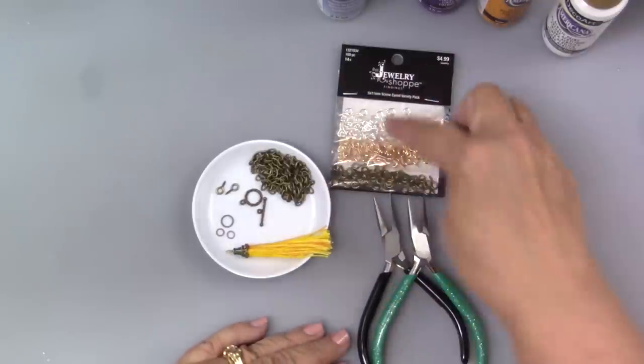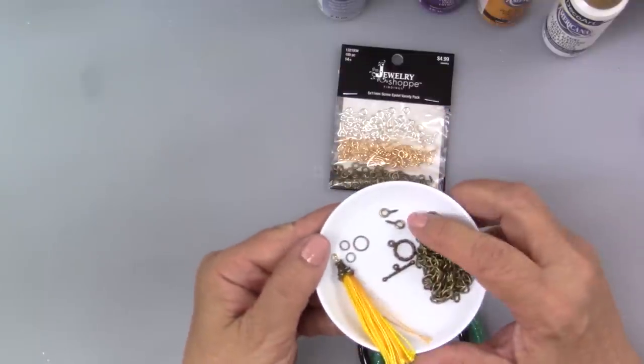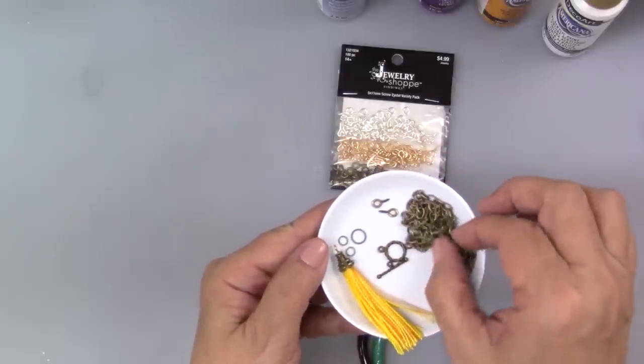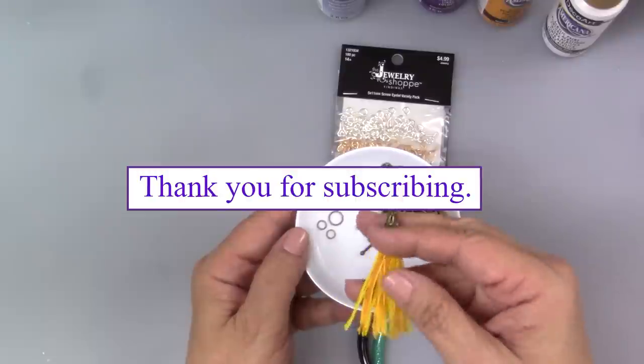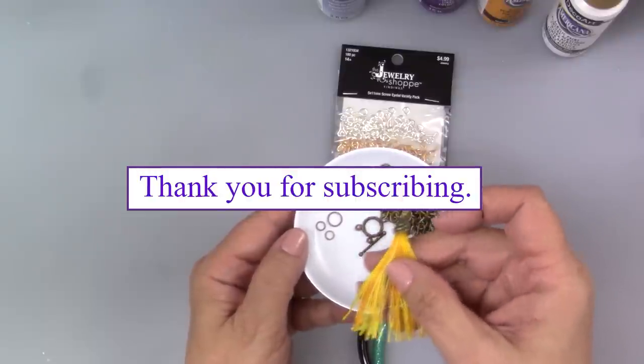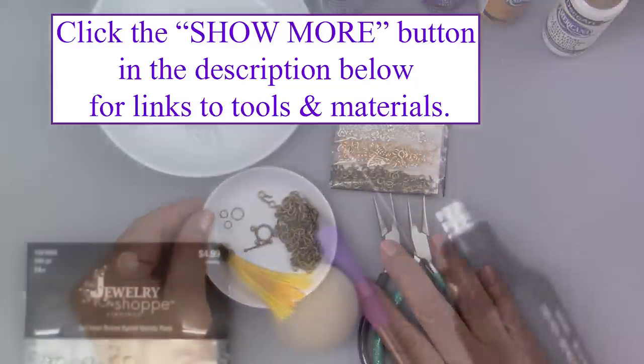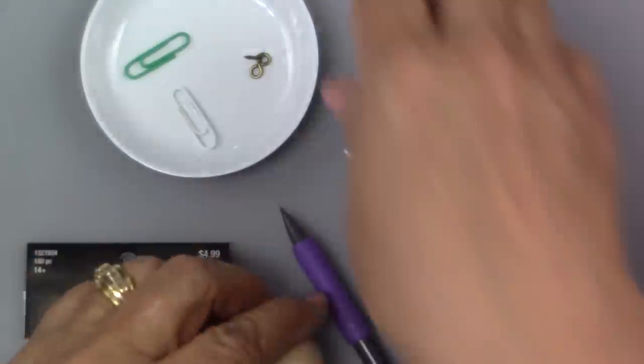I'll be using some screw eyes that I'll show you a little bit later, and then I've got some chain, some jump rings, clasp, and this little toggle that I made. Let me know in the comments if you're interested in seeing the toggle. I'd love it if you'd subscribe to my channel. It really helps me bring videos. Thanks so much. So let's see how this comes together.